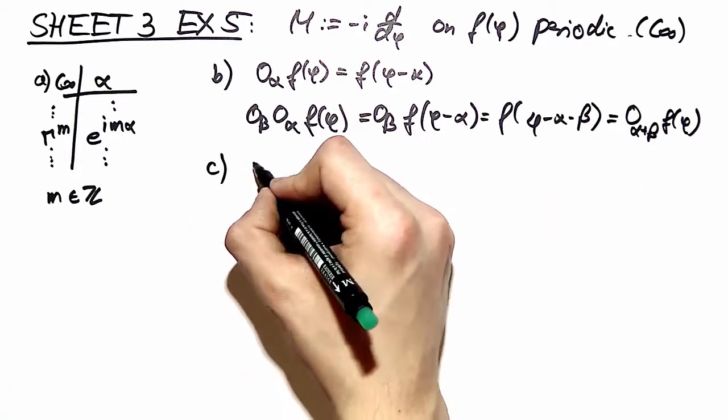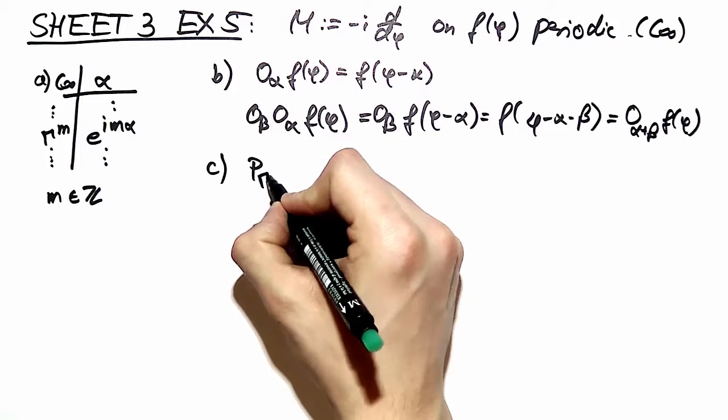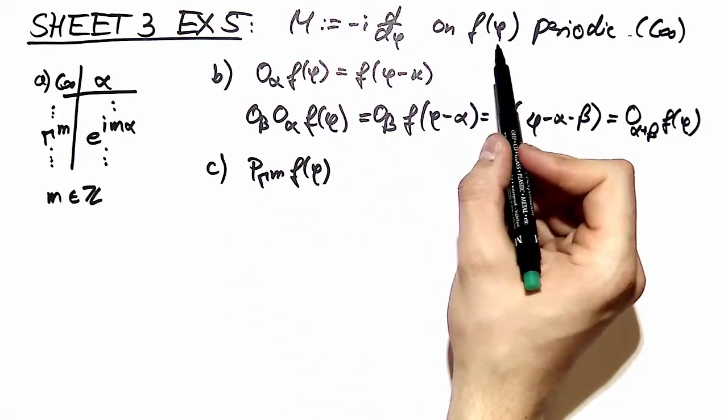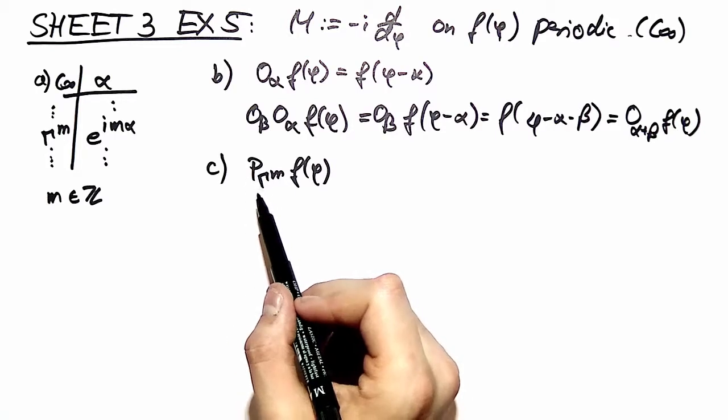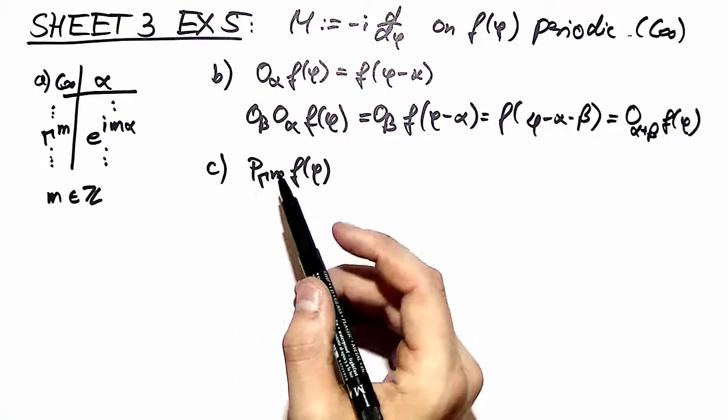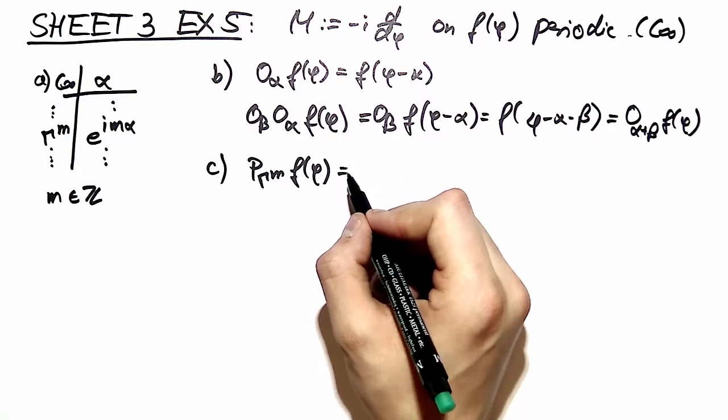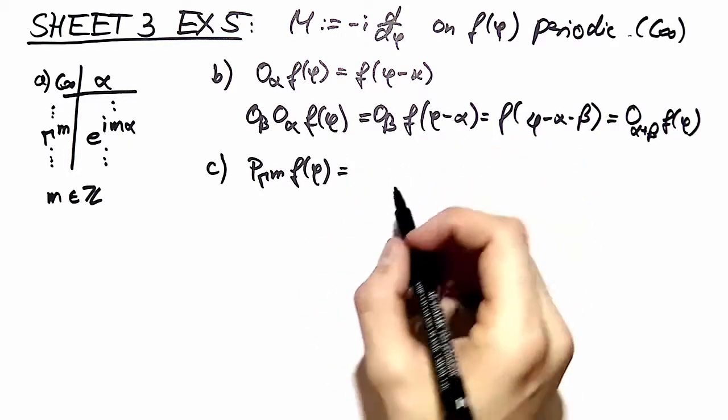In part 3 we want to project out our basis functions. We take a f of phi as a trial vector and we project according to the gamma mth representation. We discussed the projected technique in exercise number 3 and you can read out the definition there.